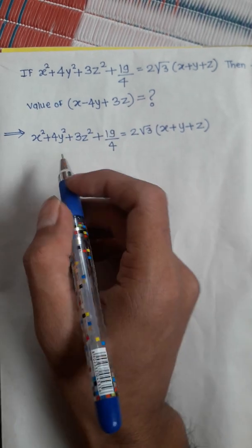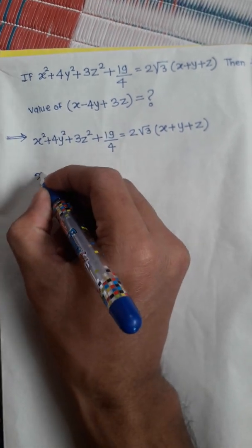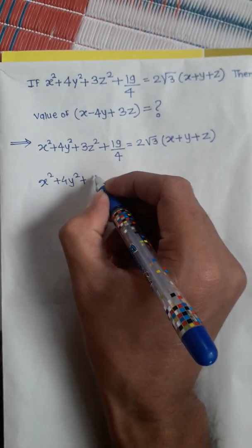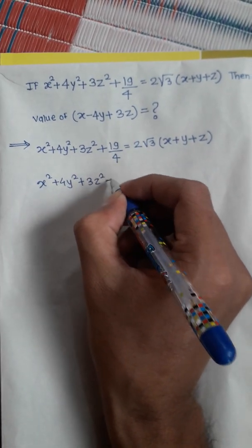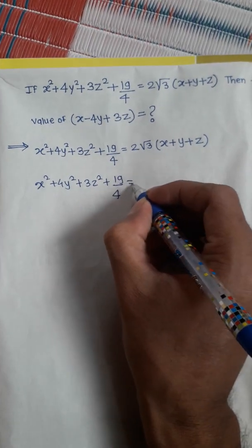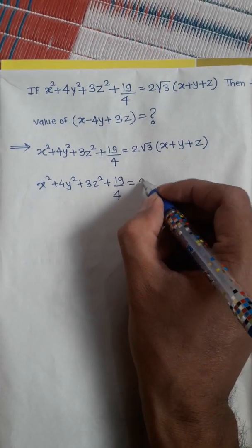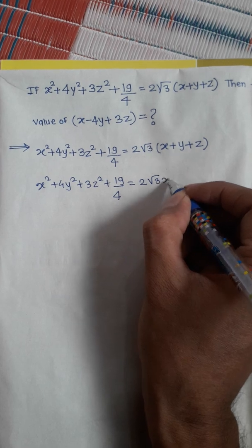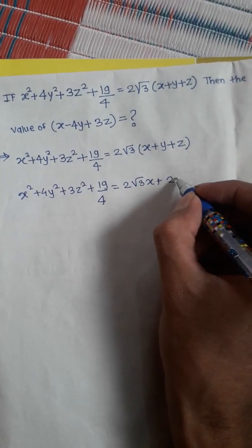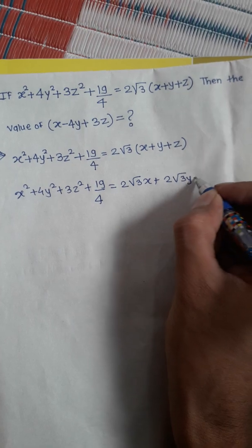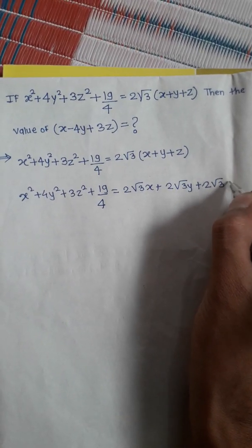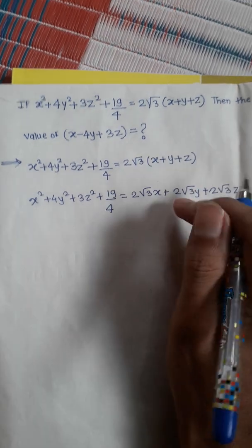Here x² + 4y² + 3z² + 19/4 is equal to 2√3·x + 2√3·y + 2√3·z. Now we will take all these terms to the left hand side.